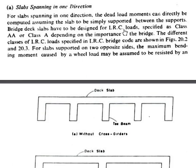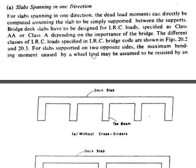The IRC load classes specified are class AA, class A, and class B, depending on the importance of the bridge. We generally consider only class AA and class A. The different classes of IRC loads are shown in the figures. For slabs supported on two opposite sides, the maximum bending moment caused by a wheel load is determined using design guidelines.